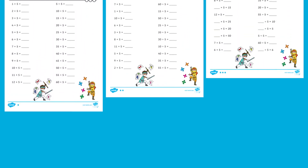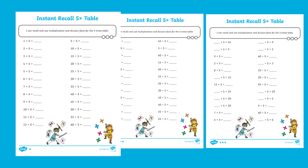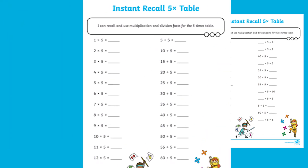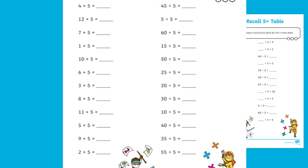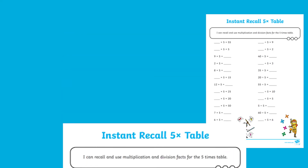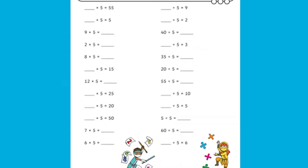These fab sheets come in three degrees of difficulty. Children can start at the one star sheet which is all in order, then progress to the two star sheet which is mixed up, and then head for the three star sheet which is mixed up and includes missing number problems.